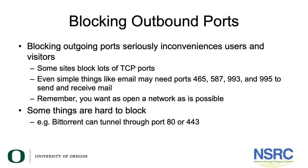When blocking outbound ports, it seriously inconveniences users and actually degrades network performance. For instance, if you do not allow SSH, SCP, or SFTP — outgoing or incoming — your network loses a great deal of its potential functionality for end users. Some sites block many TCP ports and really restrict people, but people are extremely clever and will learn to overload ports for functionality they were not meant for. Even simple things like email need ports 465, 587, 993, and 995 to send and receive. You want your network as open as possible. Some things are really hard to block — such as BitTorrent — because it can tunnel through port 80 or 443, which you need open to browse the web.